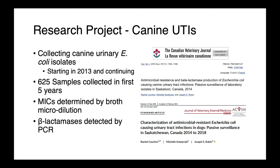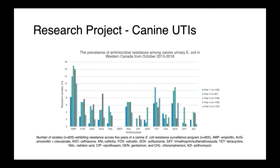Next is a longitudinal study that we've been doing since 2013 and continuing today, looking at E. coli causing urinary tract infections in dogs. We've been collecting samples from the diagnostic lab here at the college. In the first five years of the study, we had 625 isolates. We determined their MICs by broth microdilution, and then for any organisms which were resistant to beta-lactams, we went looking for beta-lactamases by PCR. The results are published in the Canadian Veterinary Journal and more recently the Journal of Veterinary Internal Medicine.